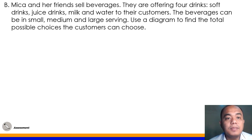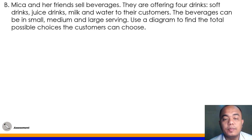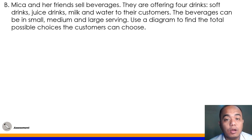Letter B. Mika and her friend sell beverages. They are offering 4 drinks: soft drinks, juice drinks, milk, and water to their customers. The beverages can be in small, medium, and large serving. Use a diagram to find the total possible choices the customers can choose.